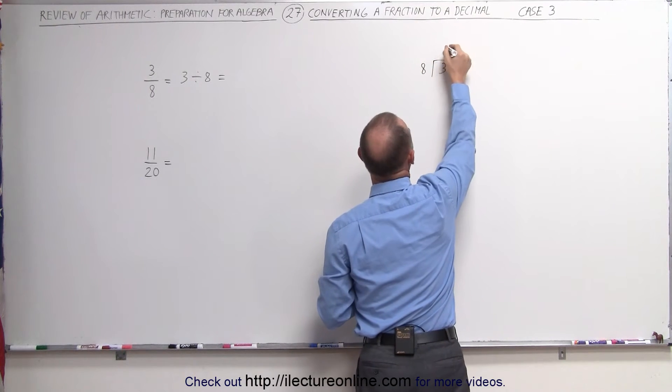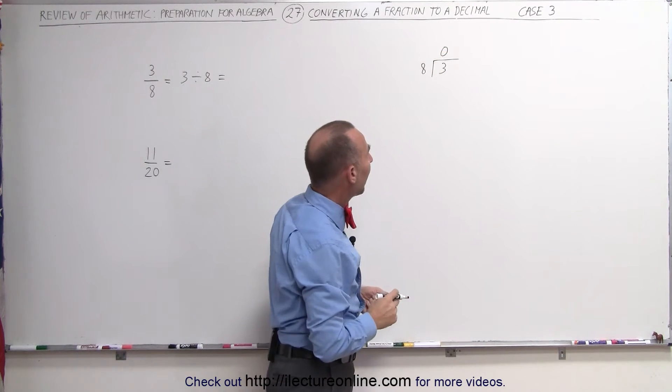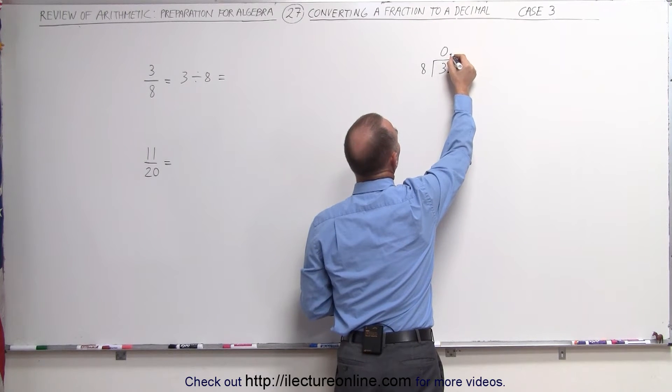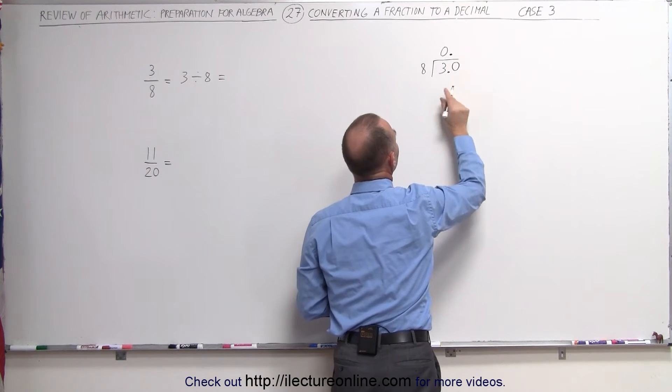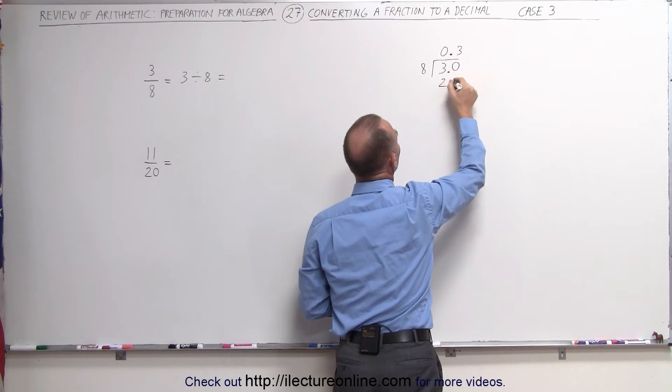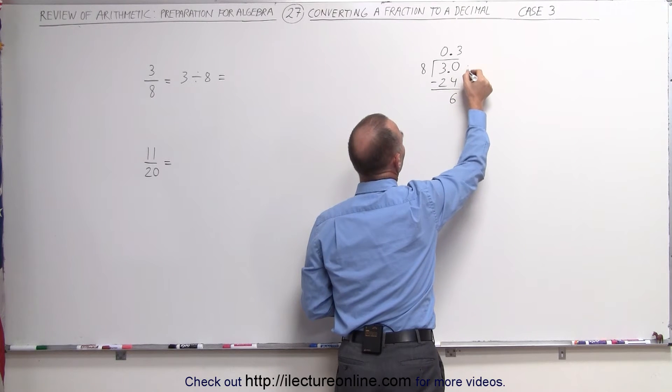Well, 8 goes into 3, 0 times, no remainder, and then we realize there's a decimal place here, that means we're going to put a decimal place there. Now we add a 0. 8 goes into 30, 3 times. 3 times 8 is 24. When we subtract that from 30, we get 6.